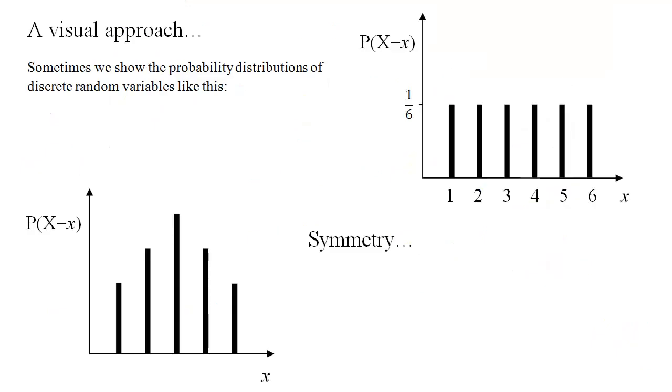And I'm just going to finish by showing you how we can visualise such probability distributions. So if you look at this graph top right, this shows the probability distribution for x, the number on an ordinary unbiased die. And you can see that all the probabilities are 1 sixth, and the values 1, 2, 3, 4, 5 and 6 are evenly spread out. So the symmetry and the layout of the whole distribution is there to see.